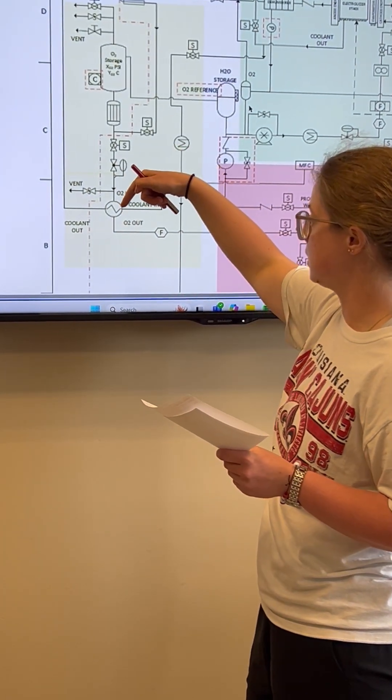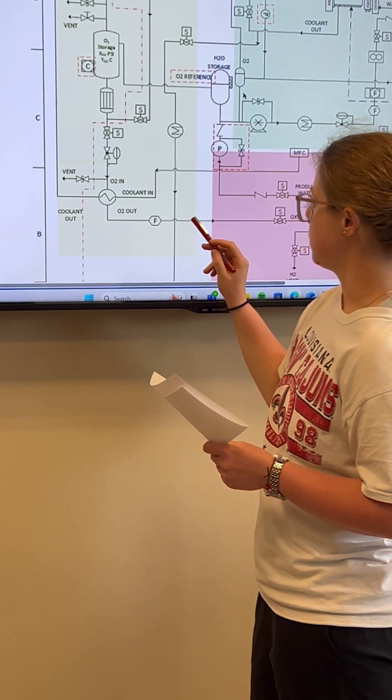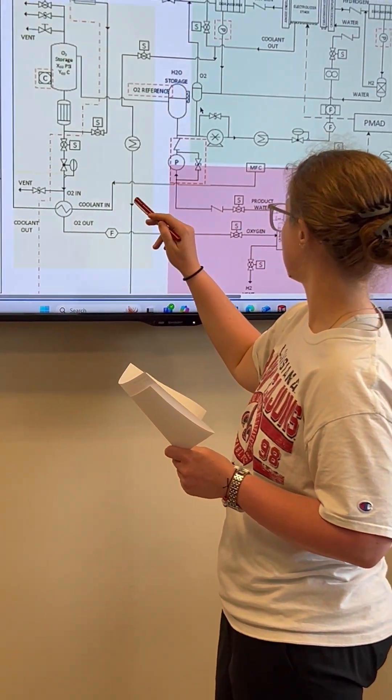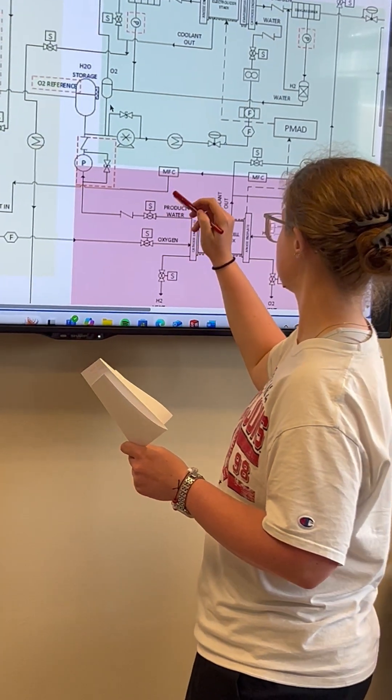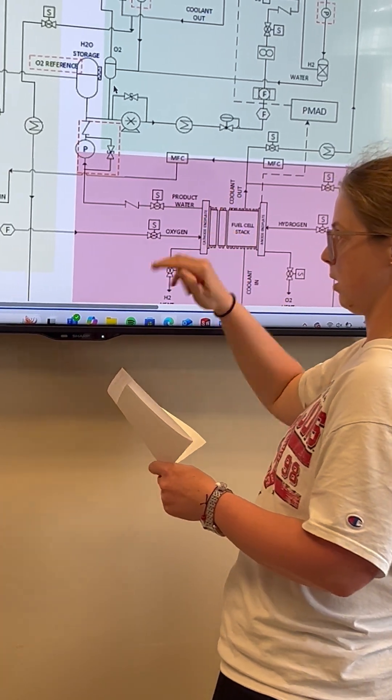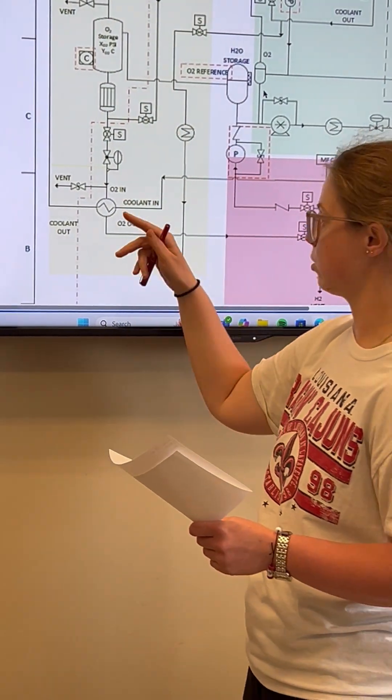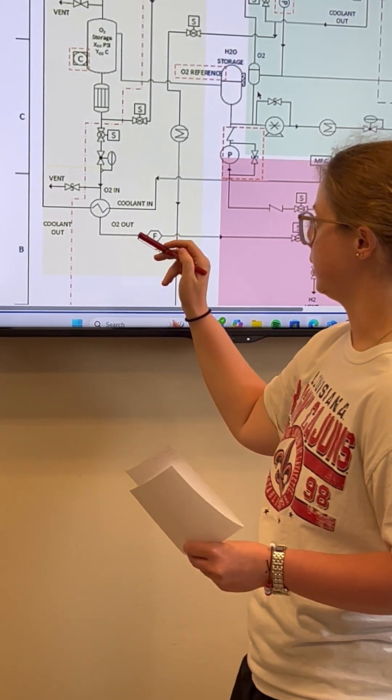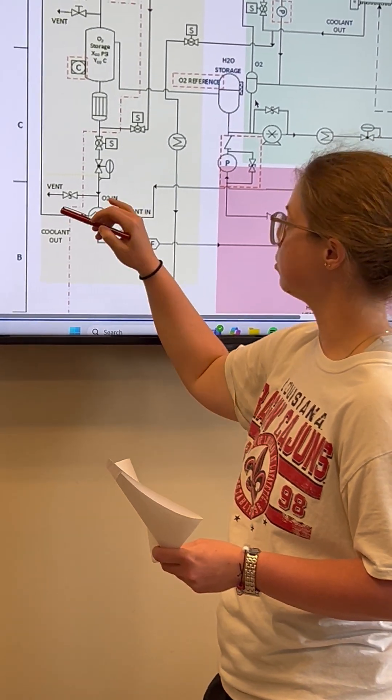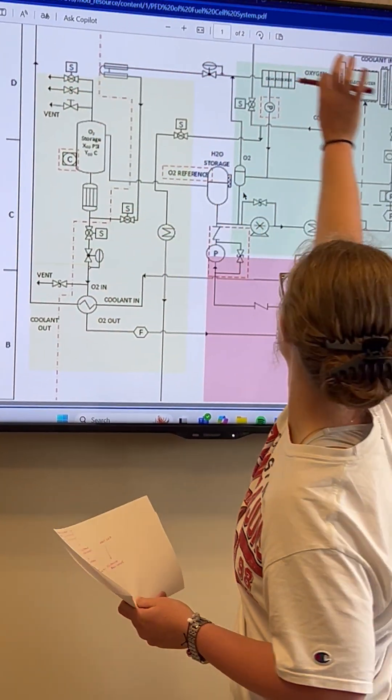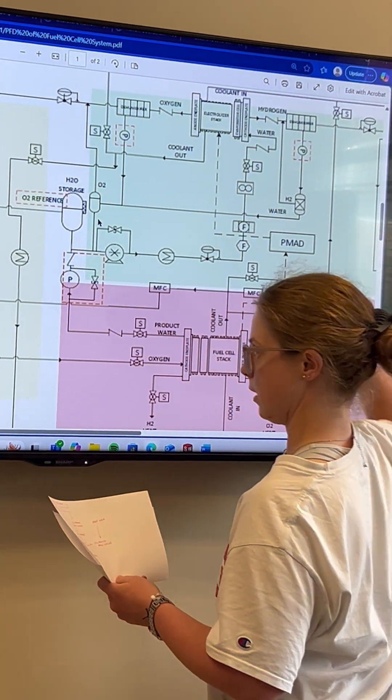or go into this heat exchanger, which mixes with coolant from this mass flow control coming from the pink section of the diagram. In this heat exchanger, we have oxygen and coolant coming in, then we push our coolant out to another part of the diagram.